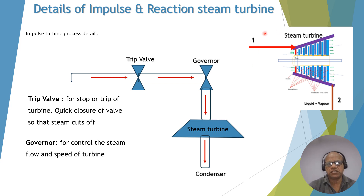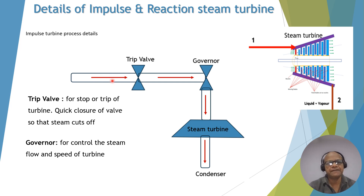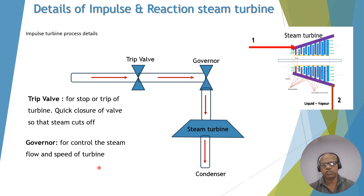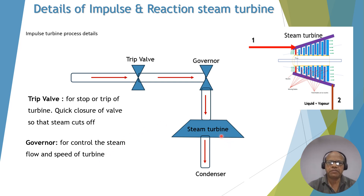Now, focusing on this, we drill down to points 1 and 2 only — that is the steam turbine expansion. Looking at the details: superheated steam comes in, and then we have a trip valve or quick closing valve. The main purpose of this quick closing valve is to isolate the steam in the event of any emergency or stoppage of the turbine. Next is a governor, whose main function is to control the steam flow as well as the speed of the turbine. Finally, steam comes to the turbine and the outlet or exhaust pressure is condensing type — meaning it goes to the condenser.